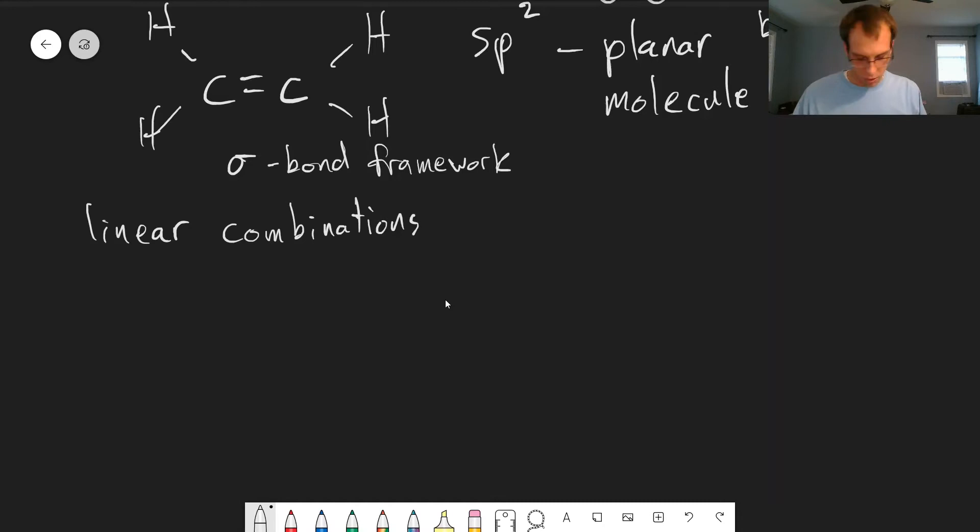So our wave function for our pi orbitals are going to be some coefficient times the two pz orbitals on carbon A, and then some coefficient times the two pz orbital on carbon B. And we should get positive and negative versions of this. And if we treat this by variational theory, use this as our trial function, we've seen this where we have a linear combination of two functions, and we can write our secular determinant.